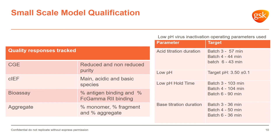We then went into small-scale model qualification. We were comparing results from three large-scale batches to the results from the EasyMax system. To compare, we used four quality attributes: capillary gel electrophoresis measuring reduced and non-reduced purity, charge variants using CIF, bioassay to confirm molecule identity, and SE-HPLC to understand aggregation.